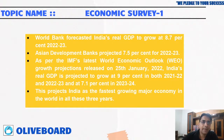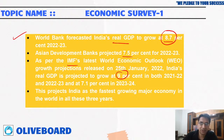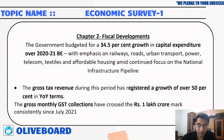Regarding international growth projections: the World Bank forecasts India's real GDP to grow at 8.7 percent. The Asian Development Bank has projected 7.5 percent. As per the IMF's latest World Economic Outlook dated 25th January, India's real GDP is projected at 9 percent. You have to remember each percentage given by these different institutions.